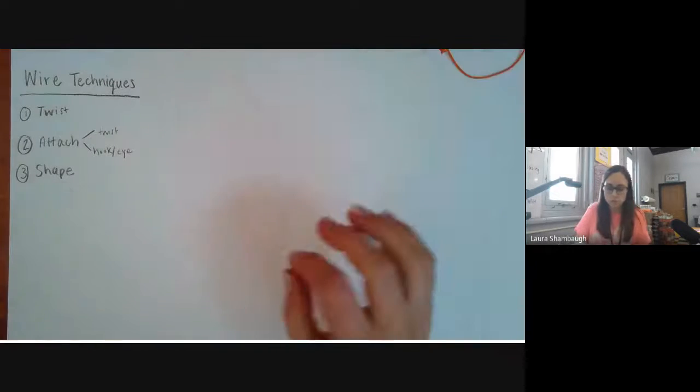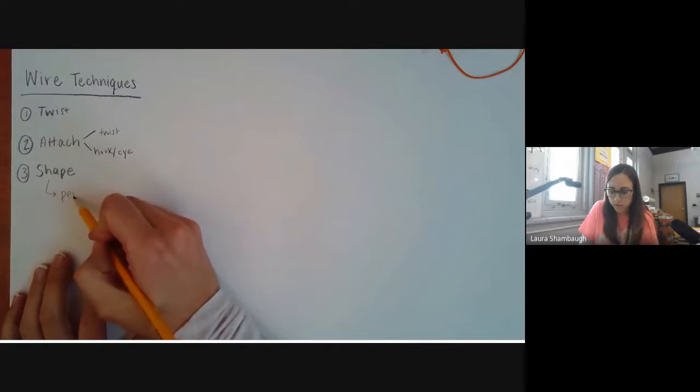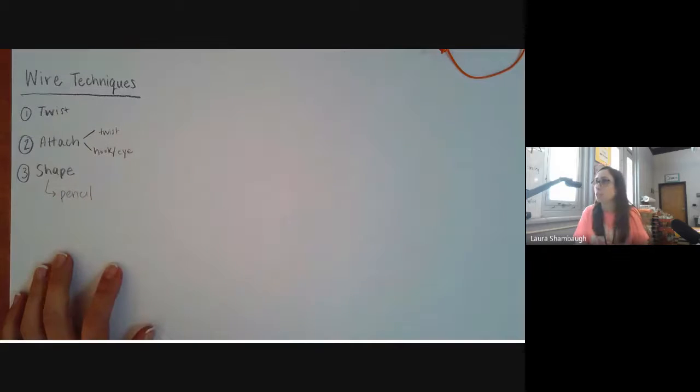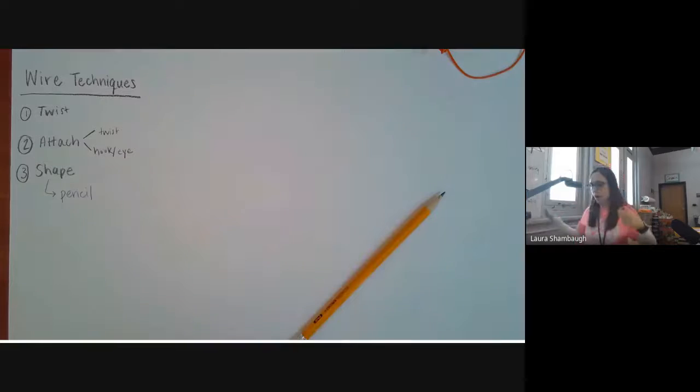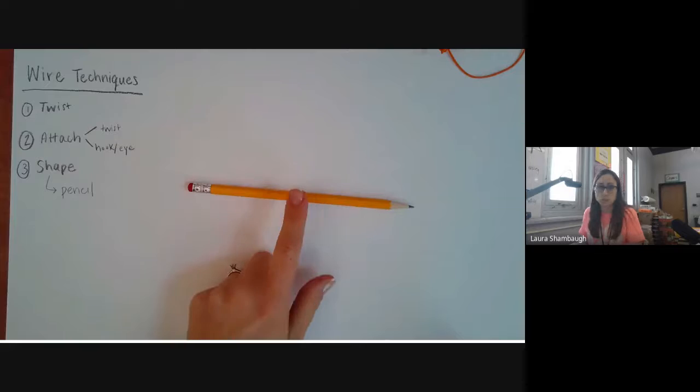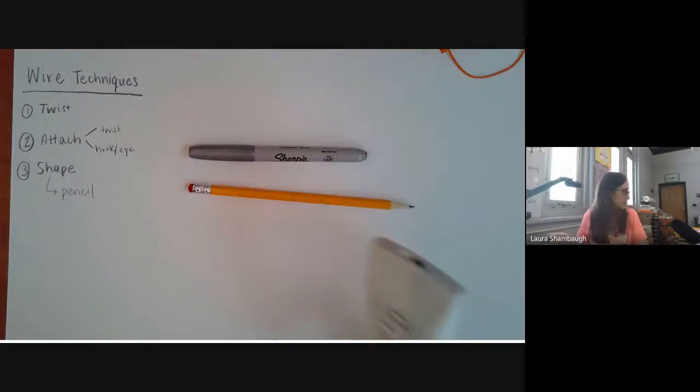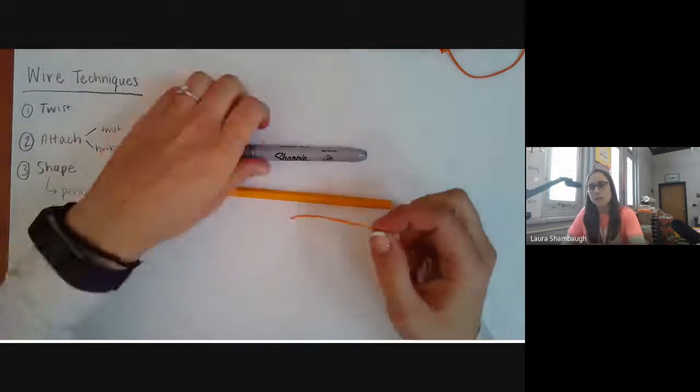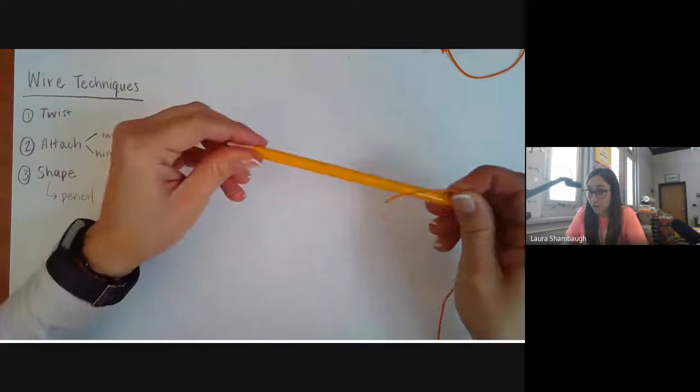I'm going to show you a couple different ways to do this. One is to use a pencil to help you create different shapes. I'm just going to use a regular pencil, but you could use any material that you have. You could use a thicker sharpie marker, a remote control, a water bottle, anything that can be used to wrap the wire around.